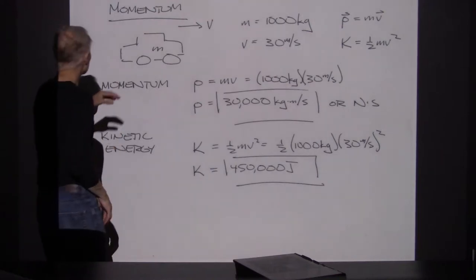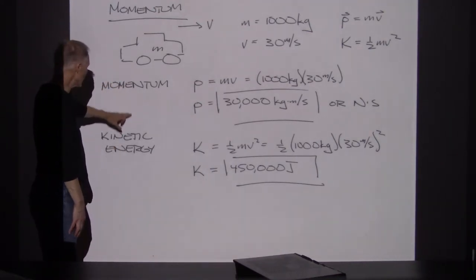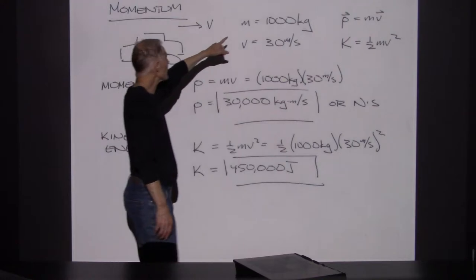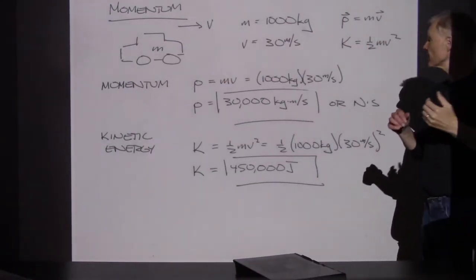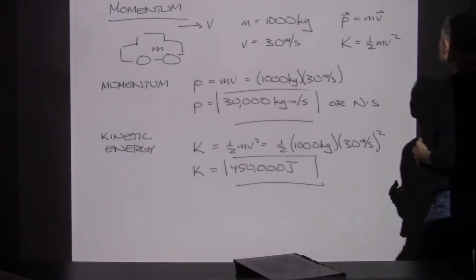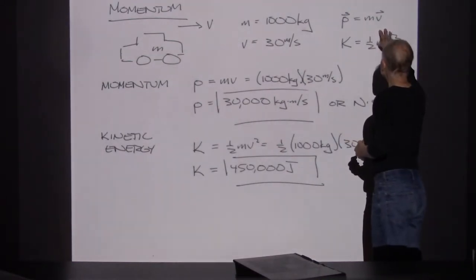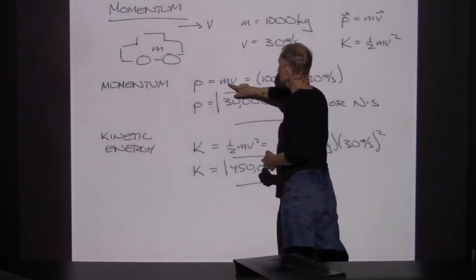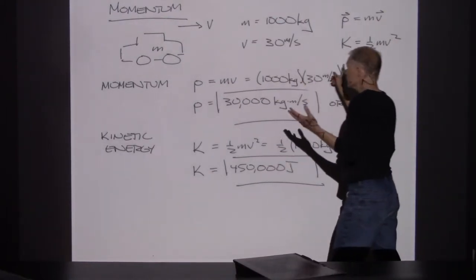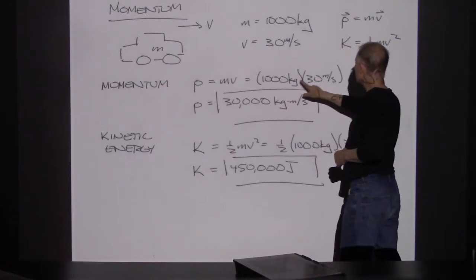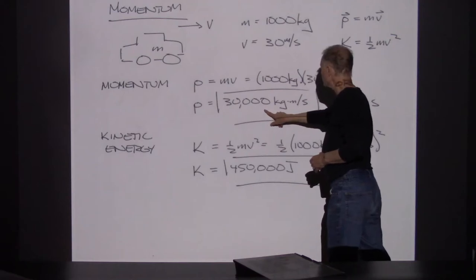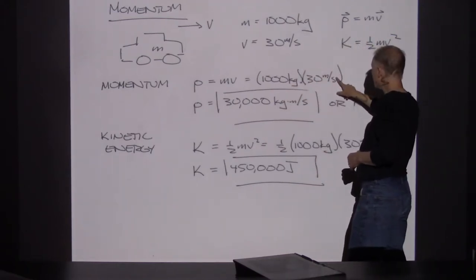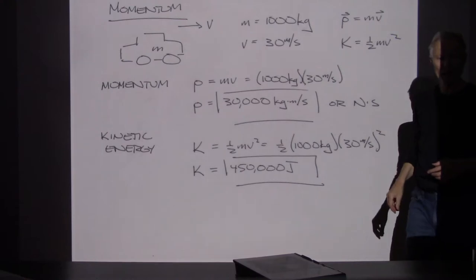Here's an example — a car. What's its momentum? What's its kinetic energy? The mass of the car is 1,000 kilograms. The velocity of the car, let's say it's traveling at 30 meters per second. Here are the formulas for linear momentum and kinetic energy. The momentum calculation: M times V gives us 1,000 kilograms times 30 meters per second, which leaves us with 30,000 kilograms meters per second. Those are the units we have for momentum.